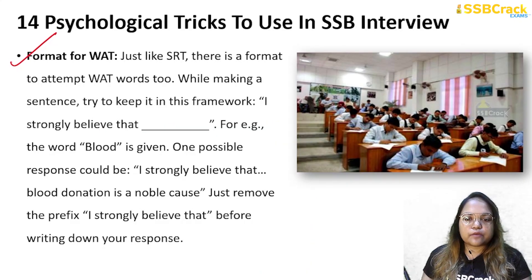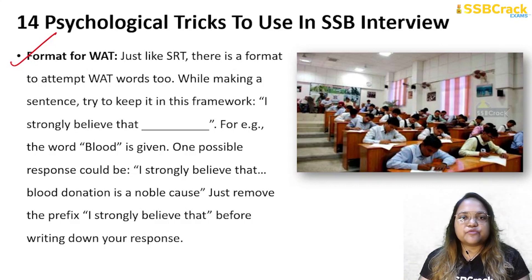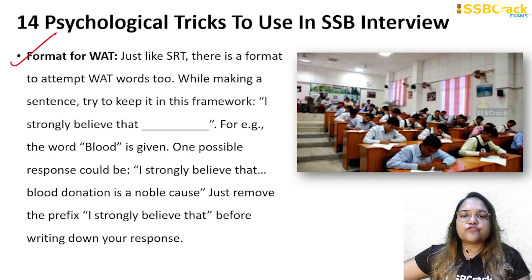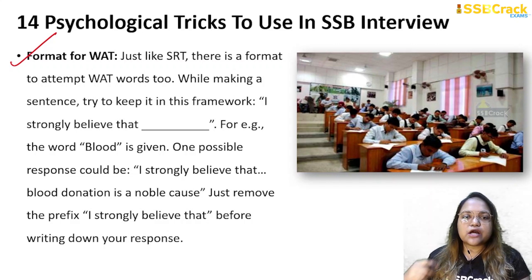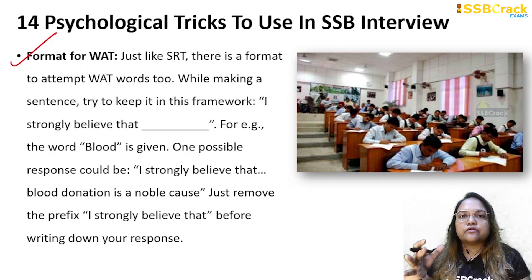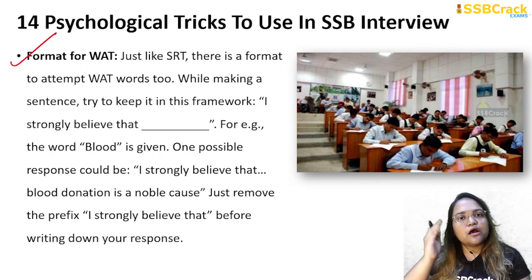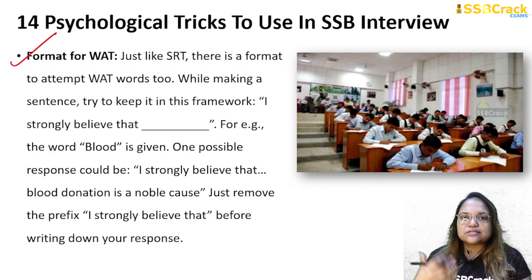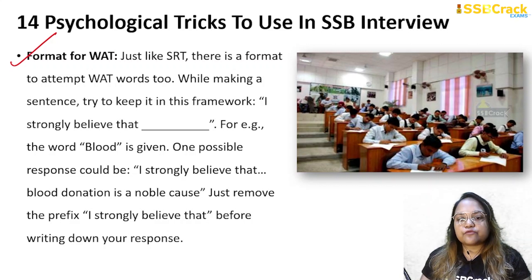The next trick is the format for WAT or VAT. You have to follow this pattern: 'I strongly believe that [something].' For example, if the word 'blood' is given, think: 'I strongly believe that blood donation is a noble cause.' But when you actually write it, do not write 'I strongly believe that' — just write what you believe: 'Blood donation is a noble cause.' This trick helps you write responses that showcase your positive qualities.